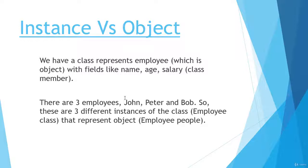Suppose we have a class that represents an employee with fields like name, age, and salary, which are the instance variables or class members. Now there are three employees — John, Peter, and Bob — so there are three instances of the class. We have created three instances of the class that represent the object. The object represents the state and behavior, and objects represent the instance members and instance functions of the class.